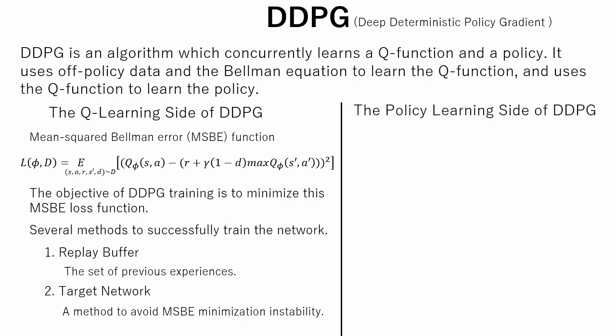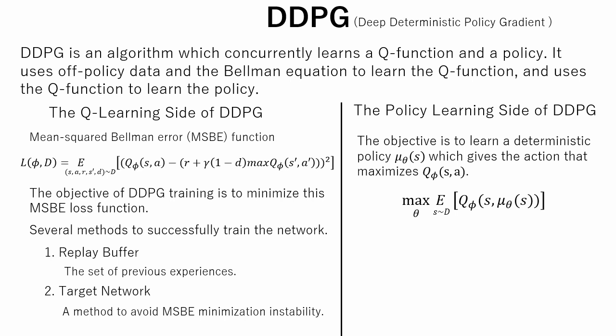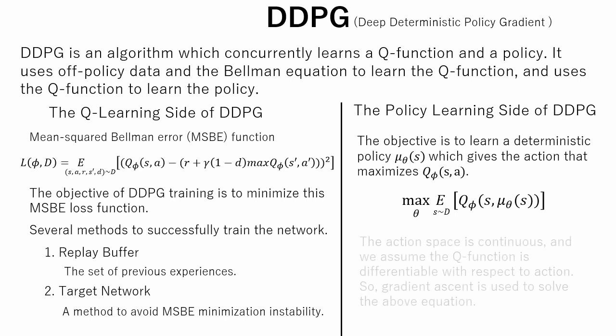Now, about the policy learning side of DDPG. Policy learning in DDPG is fairly simple. The objective is to learn a deterministic policy by theta which gives the action that maximizes Q phi. The action space is continuous, and we assume the Q function is differentiable with respect to action. So, gradient ascent is used to solve the above equation.